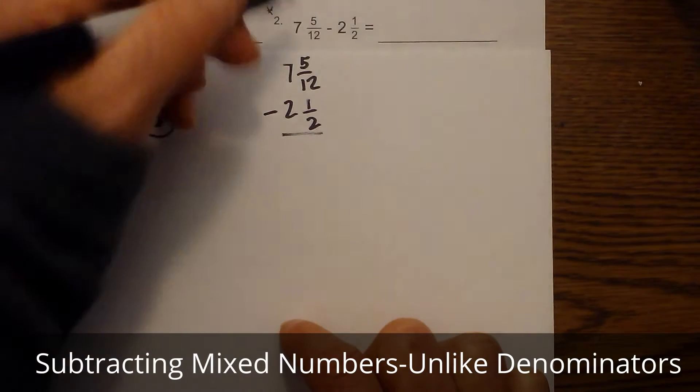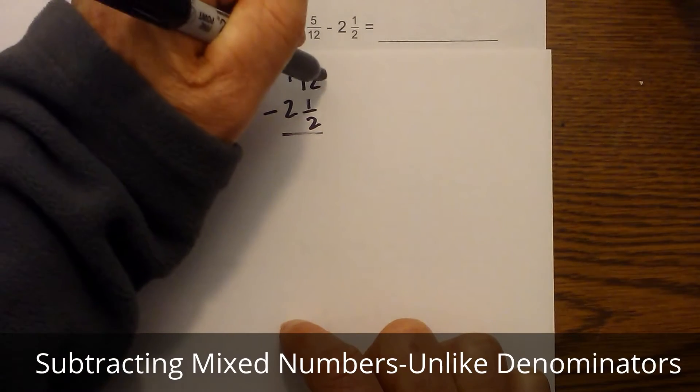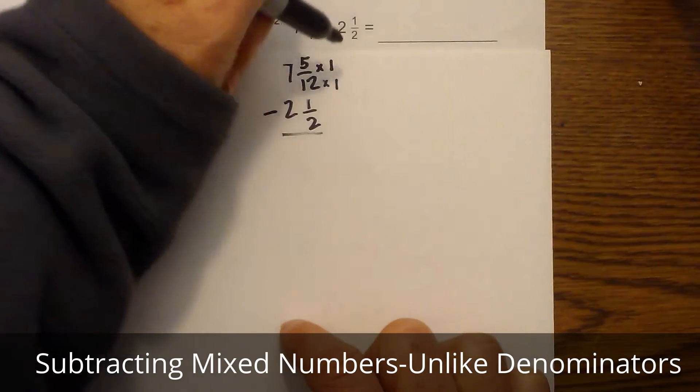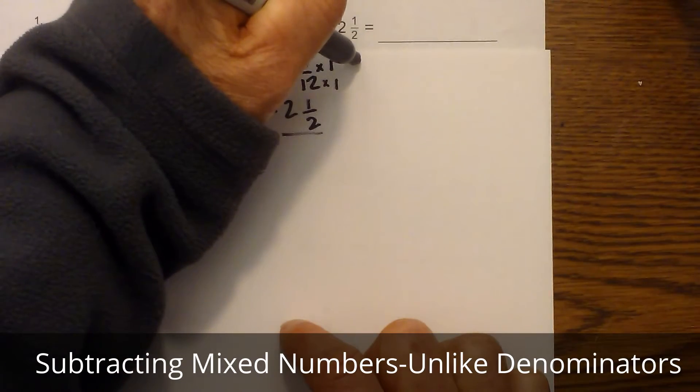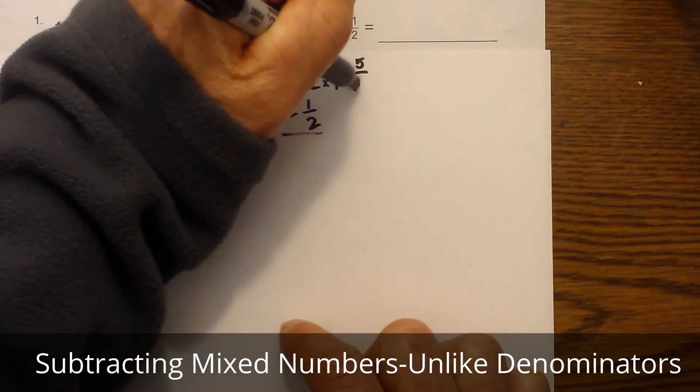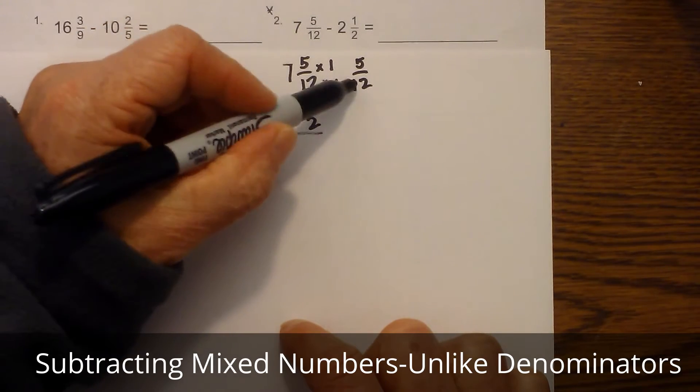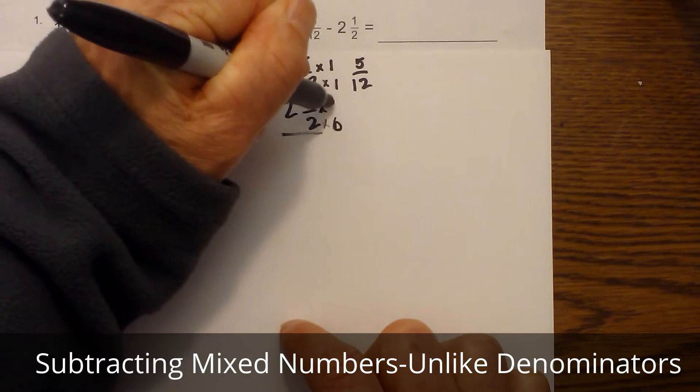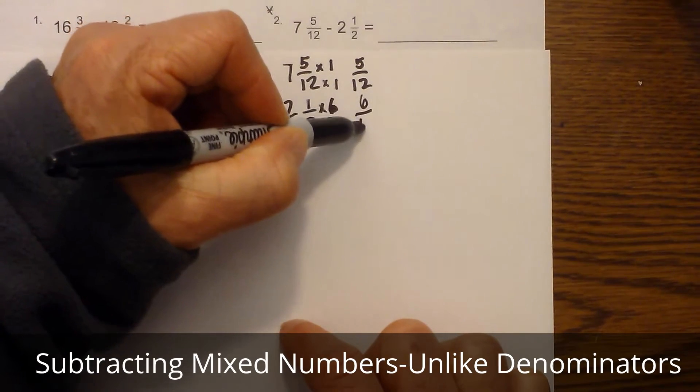Okay, so what I do next is 12 goes into 12 one time, so I'm going to multiply this by one and five by one because what you do to the bottom you need to do to the top. So this becomes five twelfths minus, and two goes into twelve six times, so I'll go two times six and one times six, so that becomes six twelfths.